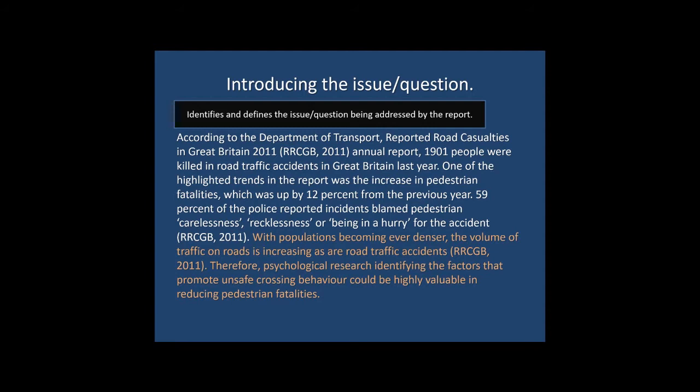In this case the issue is an increase in the incidence of pedestrians being killed when crossing the road. The orange text identifies why it's particularly important that research addresses this issue — the argument being that psychological research could have a role in identifying the factors that promote unsafe road crossing behaviour and in doing so could reduce the number of pedestrian fatalities.